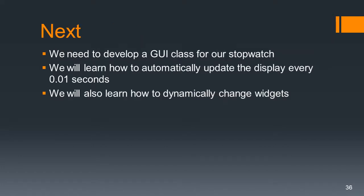Next we need to develop a GUI class for our stopwatch. We're going to put all the GUI stuff into a new class, and we'll also learn how to automatically update the display every hundredth of a second — that's important because we don't want this thing to loop continuously. With today's computers running so fast, all we need is an interrupt every hundredth of a second. We'll also learn how to dynamically change widgets — once we've created a widget, we can change its color, change what it says, and do all kinds of interesting things.